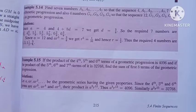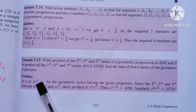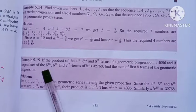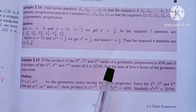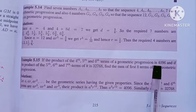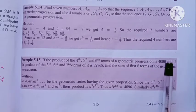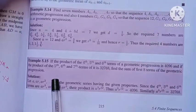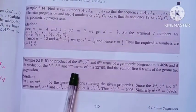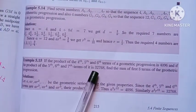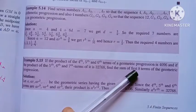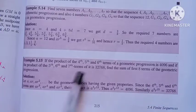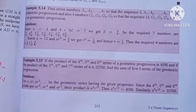Hi students, I am Vino. 11th Mark Chapter 5, Example 5.15. If the product of the 4th, 5th and 6th terms of the geometric progression is 4,096 and if the product of the 5th, 6th and 7th terms is 32,768, find the sum of first 8 terms of the geometric progression.